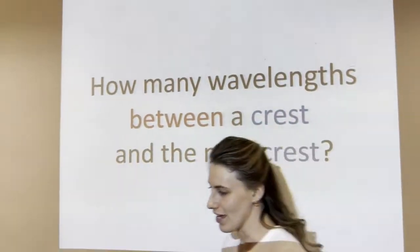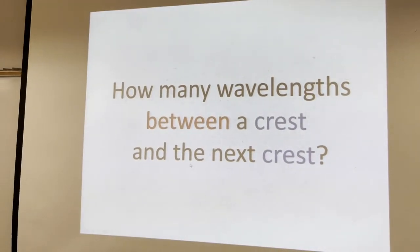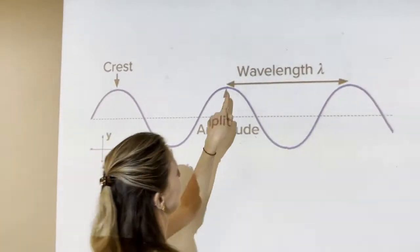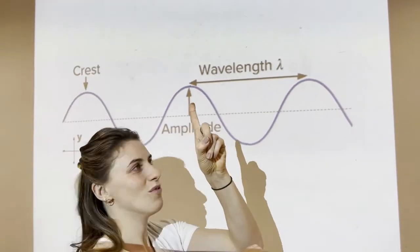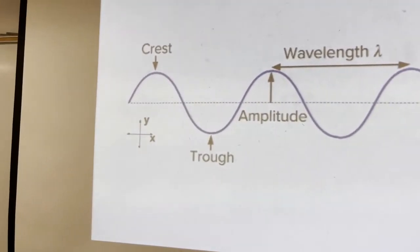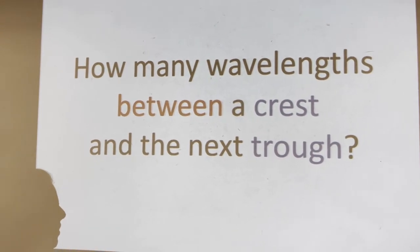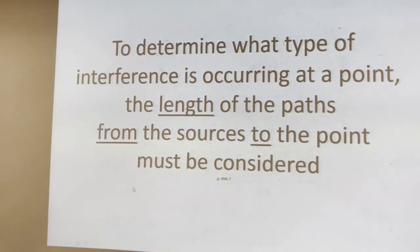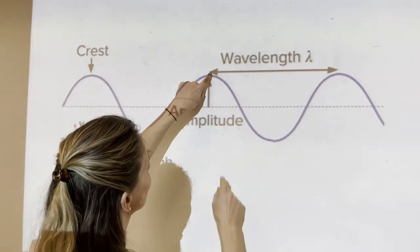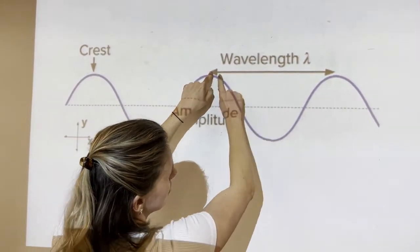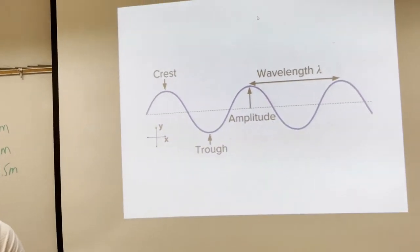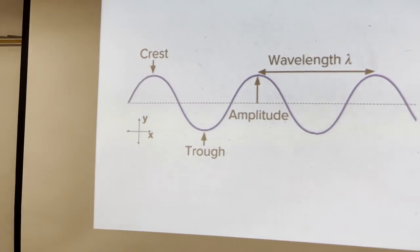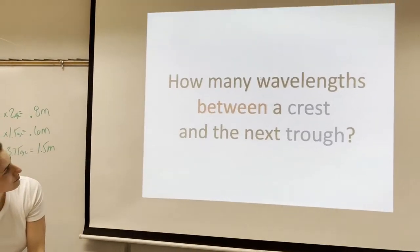All right. So how many wavelengths, how many wavelengths between a crest and the next crest? These are wave parts, right? Okay. Well, between the crest and the next crest, it's just one wavelength. One wavelength, right? Okay. So how about how many wavelengths between a crest and the next trough? Think about it. Visualize. Go back. Oh, oh, it's back. Yeah. So crest, this is the crest and the next trough will be down here. So it's half a wavelength. And if you get a crest and a crest, you get constructive interference. If you get a crest and a trough, you get destructive interference. Okay. We did see that one.